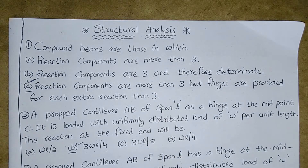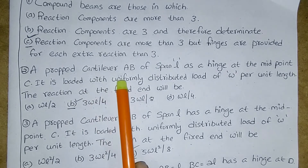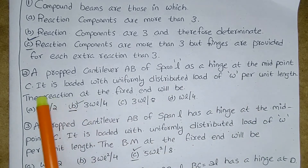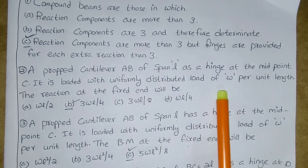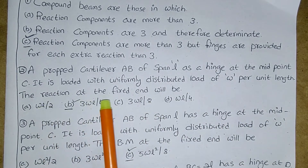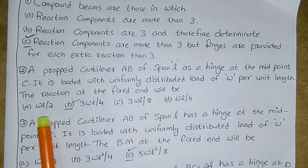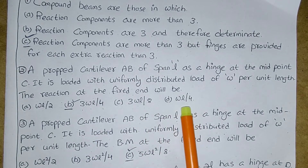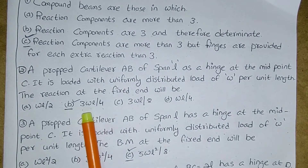Next question: a propped cantilever AB of span L has a hinge at the midpoint C. It is loaded with a uniformly distributed load of w per unit length. The reaction at the fixed end will be: (a) wL/2, (b) 3wL/4, (c) 3wL/8, (d) wL/4. The correct answer is (b) 3wL/4.